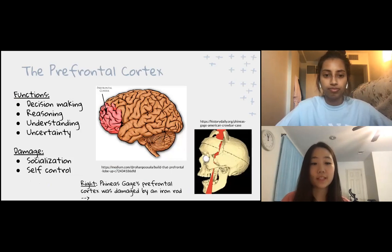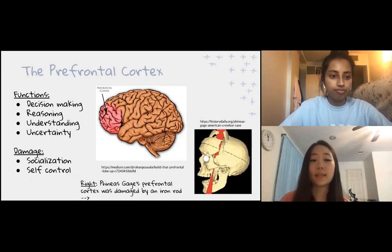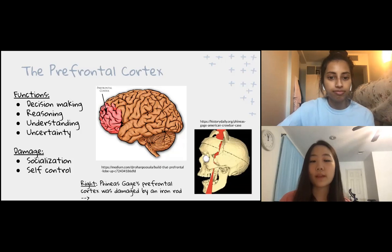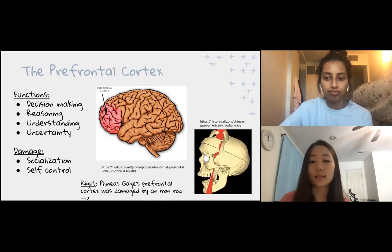One region actively involved in theory of mind is the prefrontal cortex. This region of our brain is responsible for making decisions and reasoning. It's also the part that activates when we're trying to understand something and when we're faced with uncertainty. Damage to this region will result in lack of socialization and self-control, and it's critical to properly functioning within society.